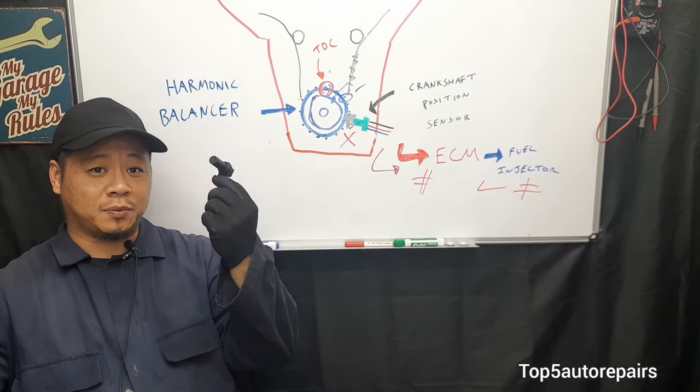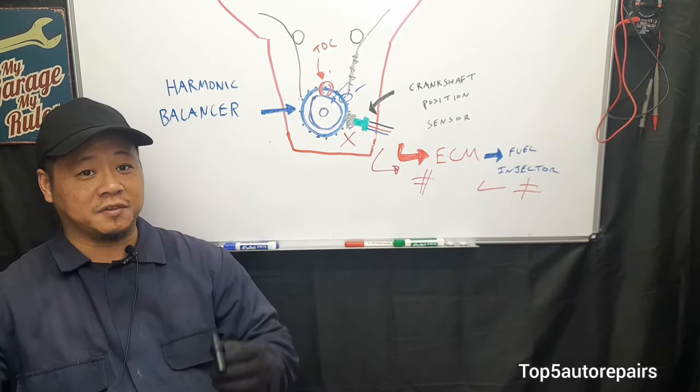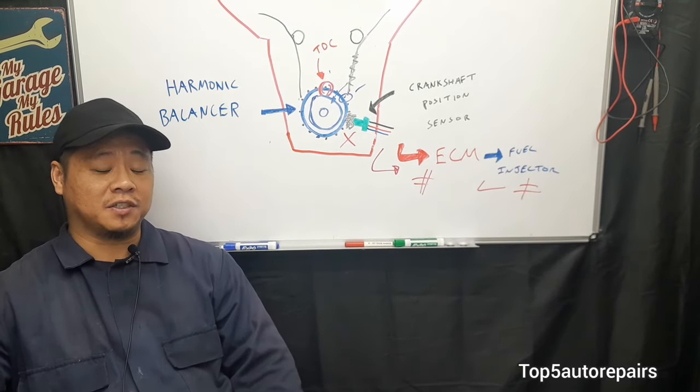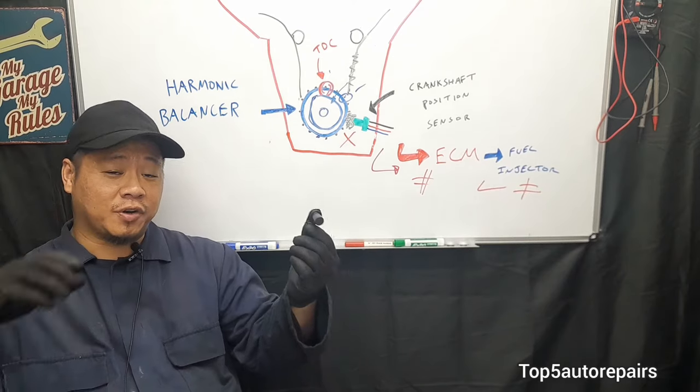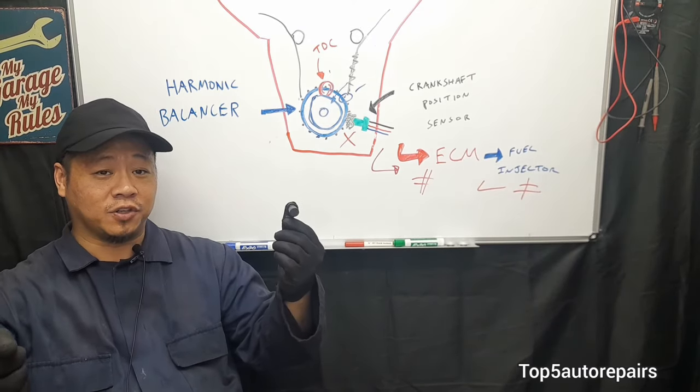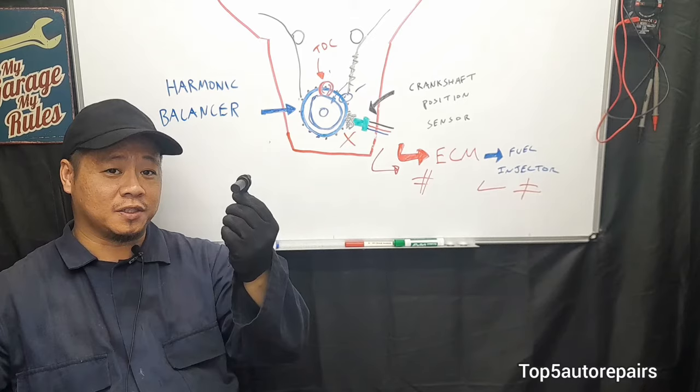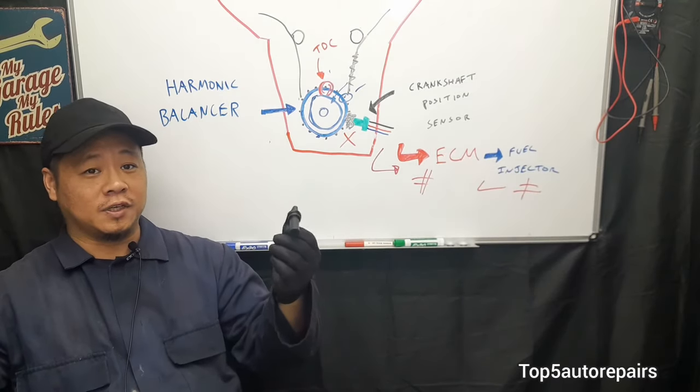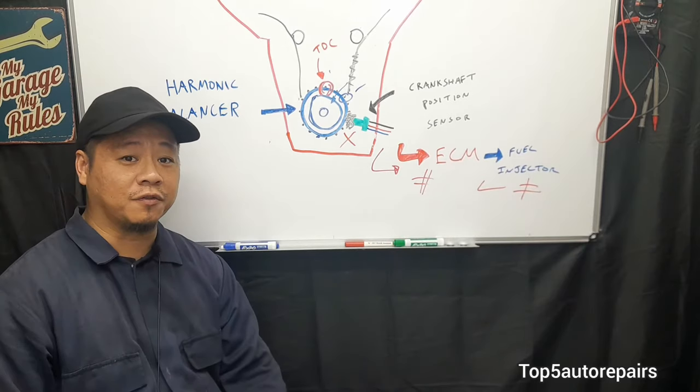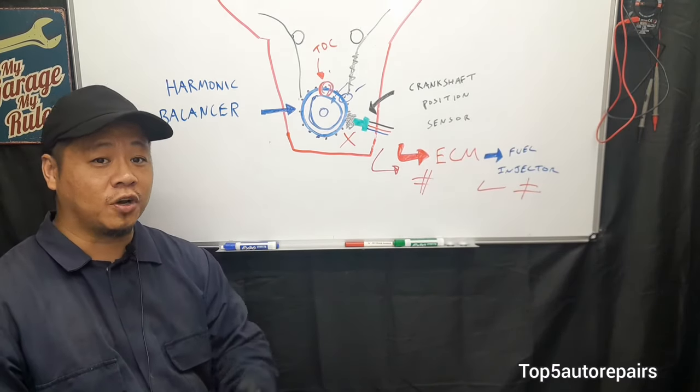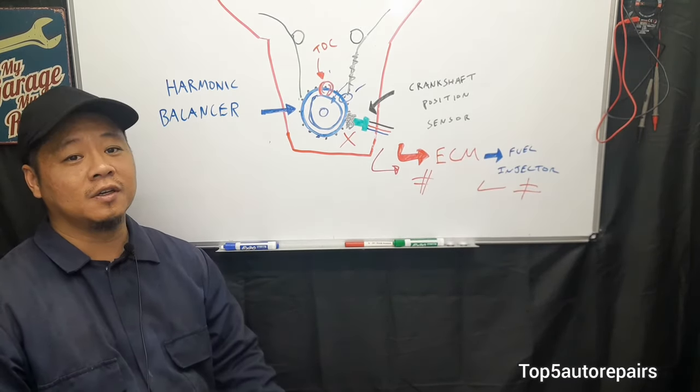Of course, when you've got a bad crankshaft position sensor, it can cause a lot of different symptoms besides intermittent problems. For example, you can have long crank time just trying to start your engine. Also, if it's completely failed or the signal got completely cut off for good, it's going to cause a no-start, and your engine will not start at all.